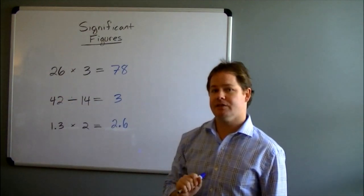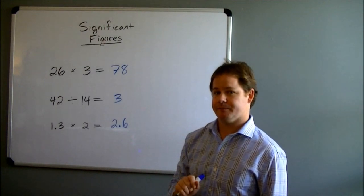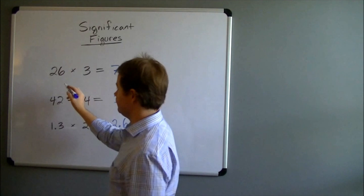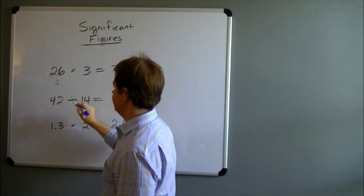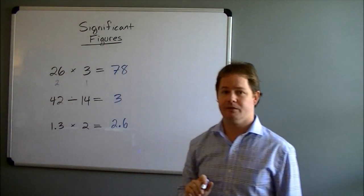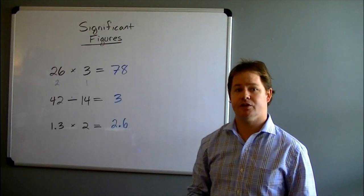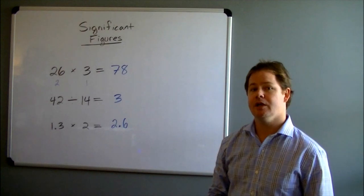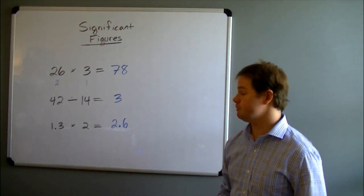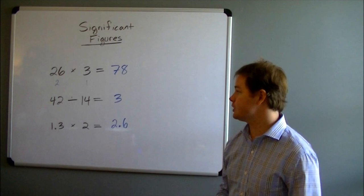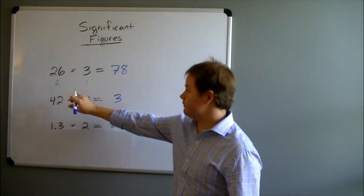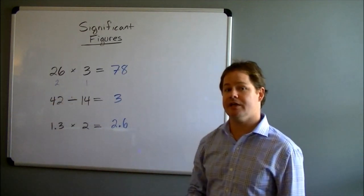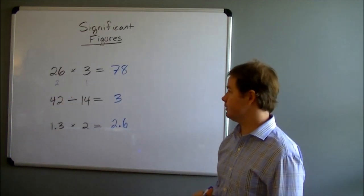When you're multiplying and dividing, the correct number of significant figures to use in your final answer is the least or fewest number of significant figures of any individual number in the problem. For 26, how many significant figures does that number have? If you said 2, you're correct. 26 has 2 significant figures, and 3 has only 1 significant figure. If we have 2 sig figs and 1 sig fig, then that means the fewest is 1. So our final answer should have 1 significant figure.